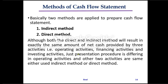The indirect method starts with operating activities. Operating activities are treated differently. The starting point is net profit — that is, net income from the income statement — and then we adjust to arrive at net cash from operating activities.